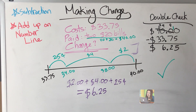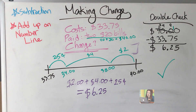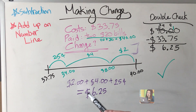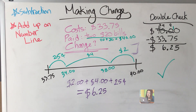Six dollars and twenty-five cents — it matches! We found our change. Remember, this is a life skill you're going to want as you get older. The more you make purchases with cash, you want to make sure you're getting the correct change and not overpaying. You can do a number line in your head and add up the amounts — great mental math — or use a calculator and subtract. Two options for making change. Hope this helps, thanks for watching!